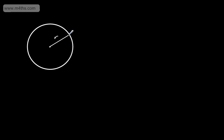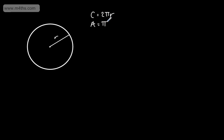The circumference is the distance around the outside of the circle — if you started here and walked around, that would be the circumference. The circumference, which we call C, is given by 2πR. If we wanted the area, which is the space trapped inside the circle, the area would be equal to π — pi is just a number, about 3.14 — multiplied by the radius squared.